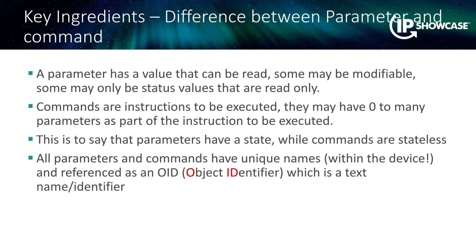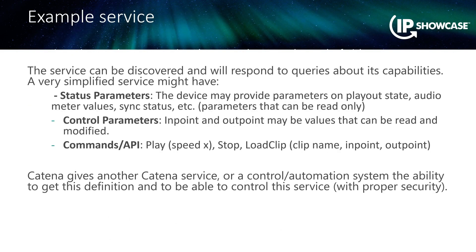Another important concept is OIDs. Everything in Katina has an OID — an object identifier — which is just a unique identifier to separate that service or device from any other ones, so when we're controlling it we point to a particular OID. For example, a service might have status parameters where you can ask what's your playout state right now — are you playing, paused, or stopped? Parameters can also include things like audio meter values, and you can imagine the volume of data there being absolutely massive — but Katina does scale up to all of that.